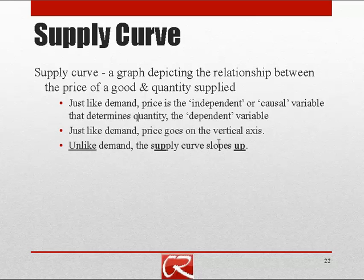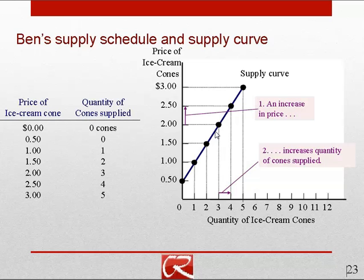...the law of supply indicates that the supply curve should slope up, because sellers are willing to sell more if they can get a higher price. If you think about what it would mean for those curves to slope the other way around, things would be pretty crazy: an upward-sloping demand curve would imply that as you raise the price, people want to buy more; a downward-sloping supply curve would imply that as you lower the price, sellers offer you more than they did at a higher price.